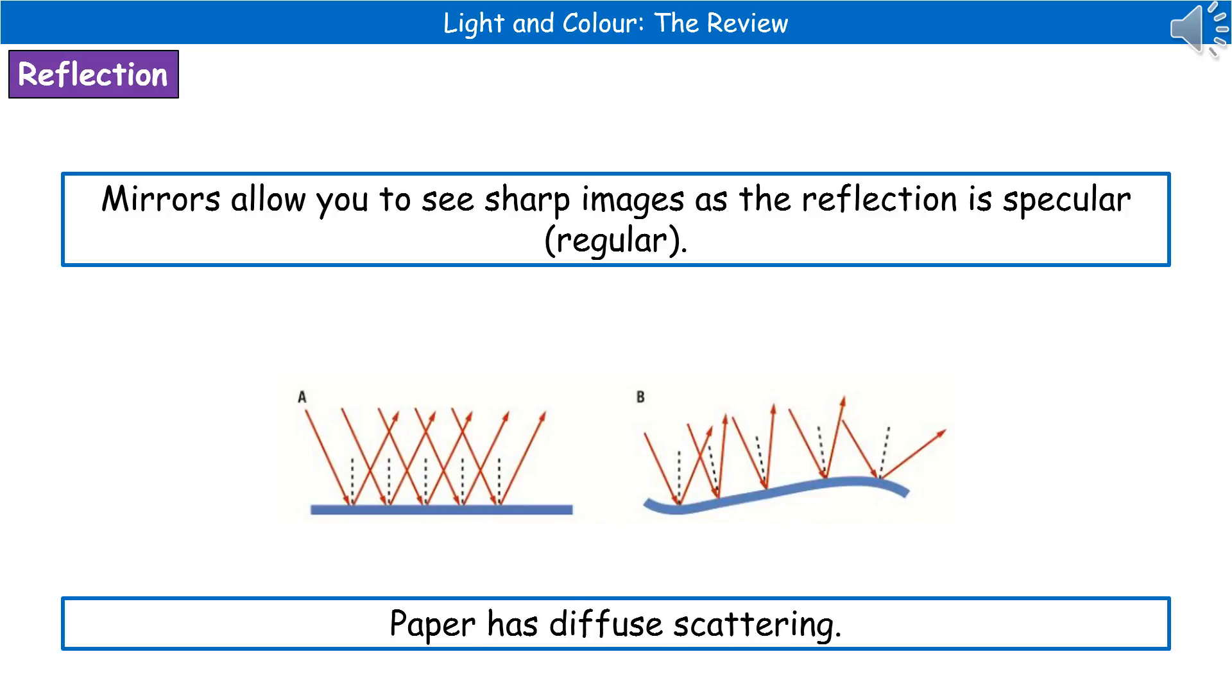When we're considering reflection, it's all about the surface that we've got. The reason that we use mirrors to look at ourselves and sort our hair and makeup is because we get a nice sharp image as our reflection. The reason for that is because the reflection is what's called specular. So it's a regular reflection because it's got a lovely smooth surface.